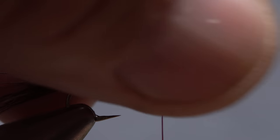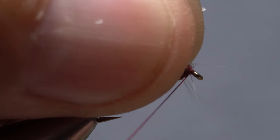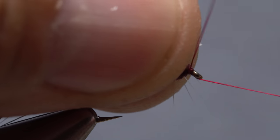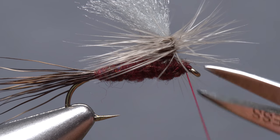Pull all the hackle in the post rearward to expose the hook eye, then take a few wraps of tying thread behind the eye to anchor your thread. Pull the hackle back once again and do a four or five turn whip finish. Seat the knot well and snip your tying thread free.